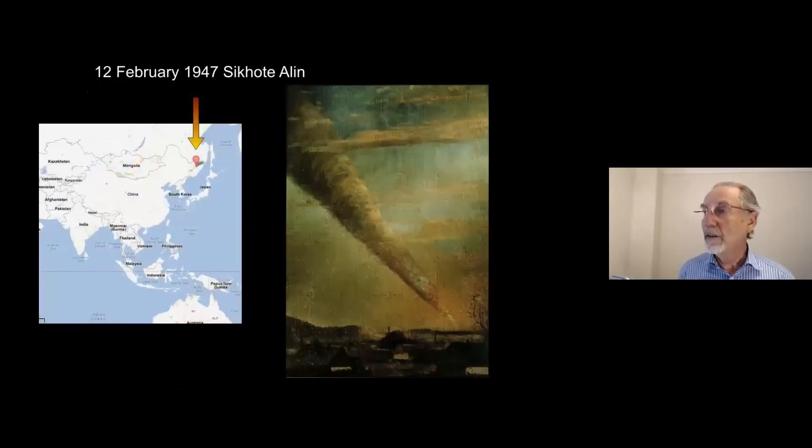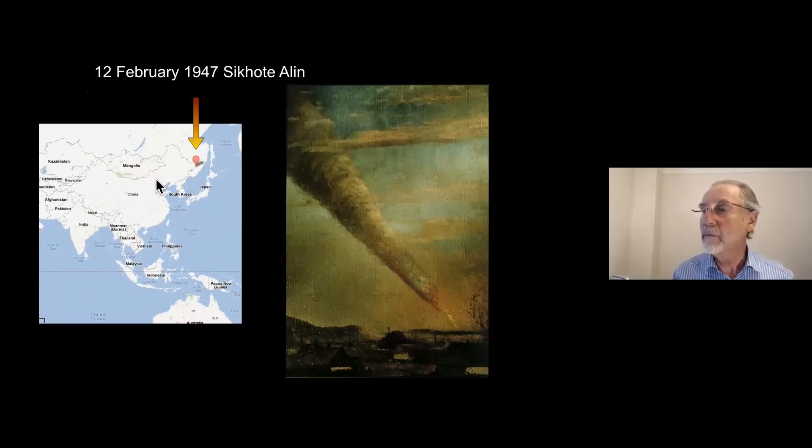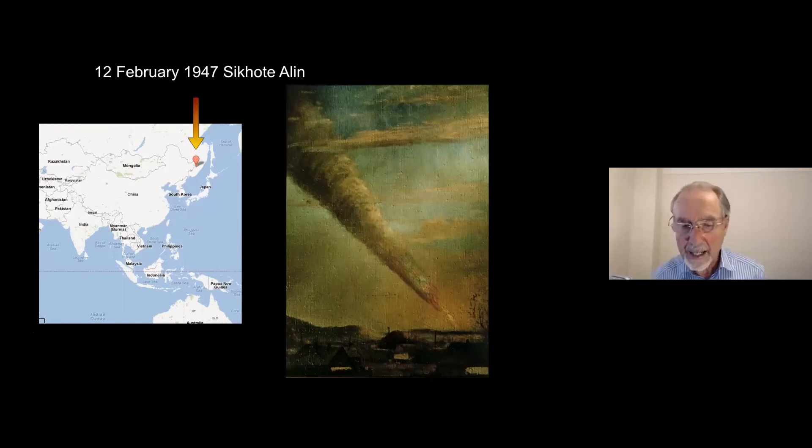If we then go back to 1947, 12th of February, 10 in the morning, the painter, P.J. Medvedev, was about to start a painting when he looked out of his window. And this is what he saw. He saw this, a very bright object, brighter than the sun, crash into the ground and a cloud that persisted for about four hours. This took place in the Sikhote-Alin Mountains. There they are. That's the direction of the impact. And this was, in fact, an iron nickel meteorite of about 90 tons. And it did end up making a crater in the ground.